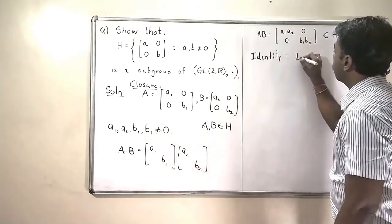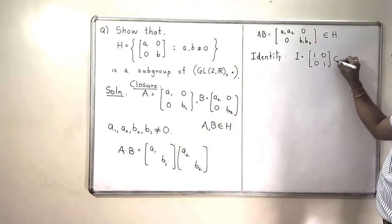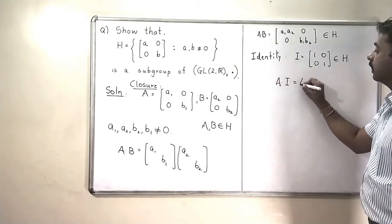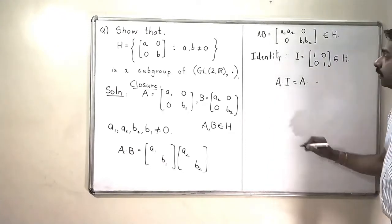What is the identity of this particular group? Clearly, we know that identity matrix which is [1, 0; 0, 1], this belongs to H because A times any identity matrix will be again equal to A. So this identity will work for us. Then,